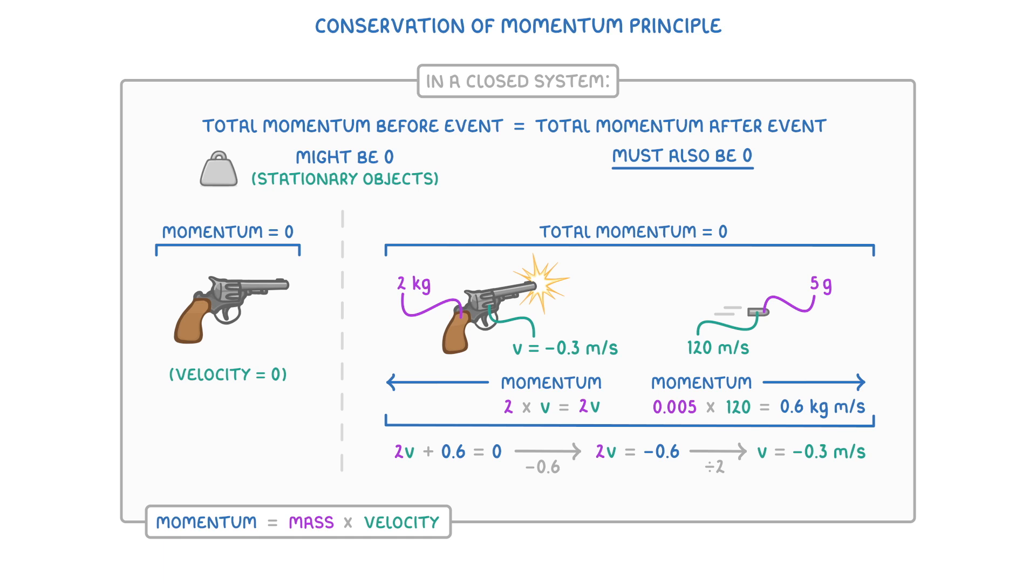And remember, the fact that it's negative means that it's effectively going backwards. Or in other words, it's going in the opposite direction to the bullet.